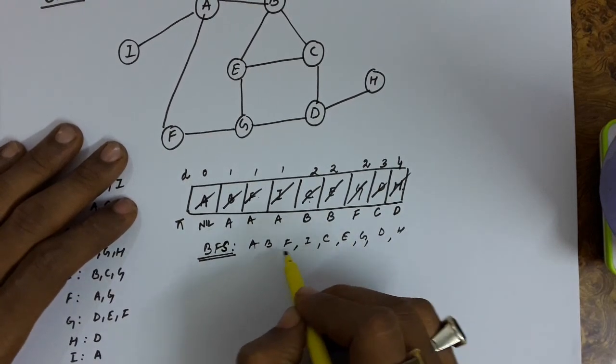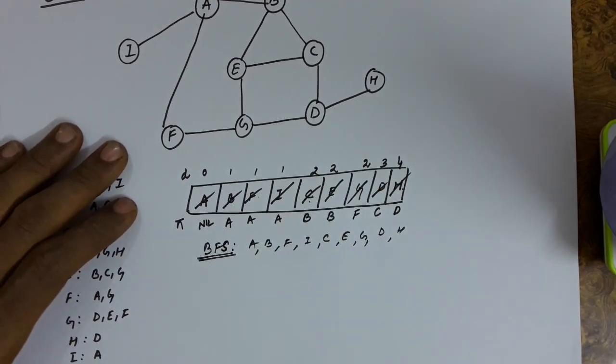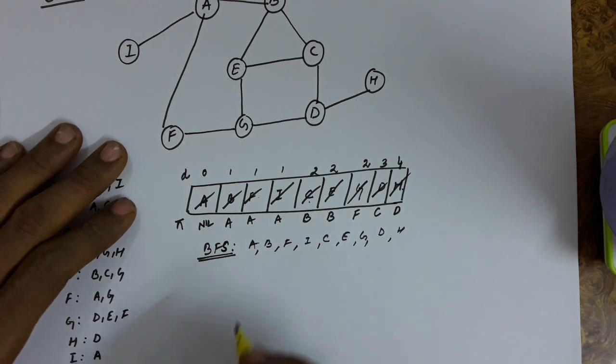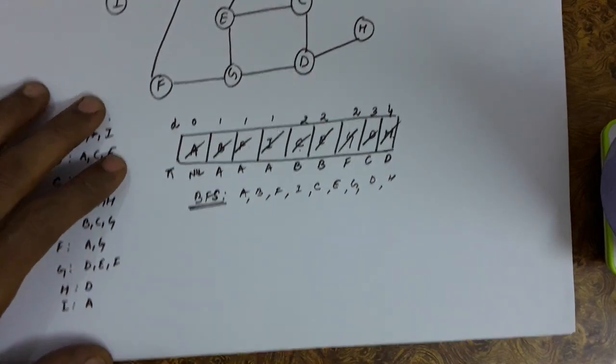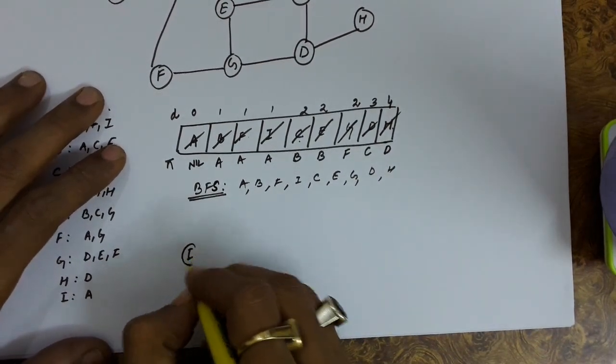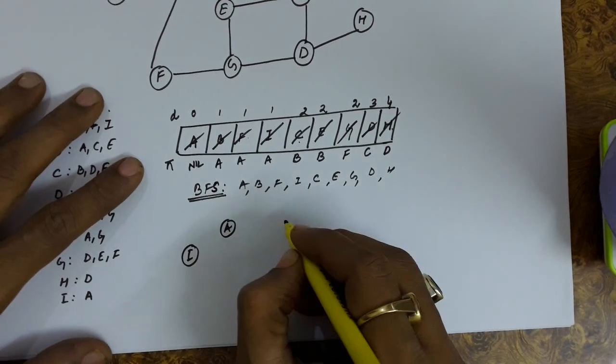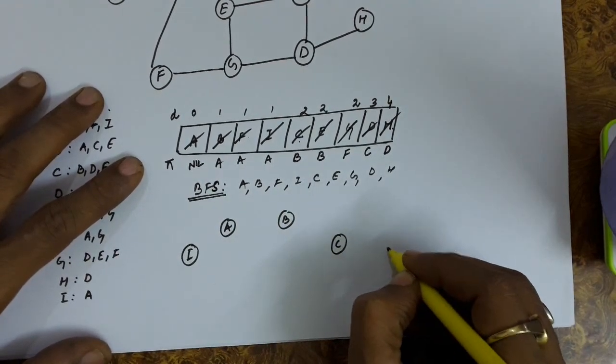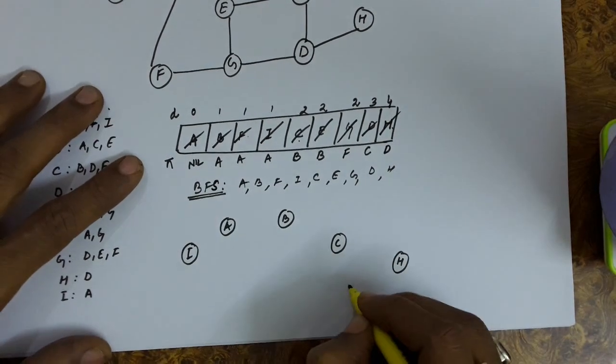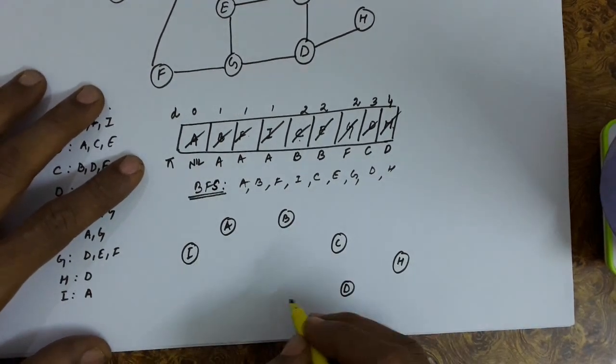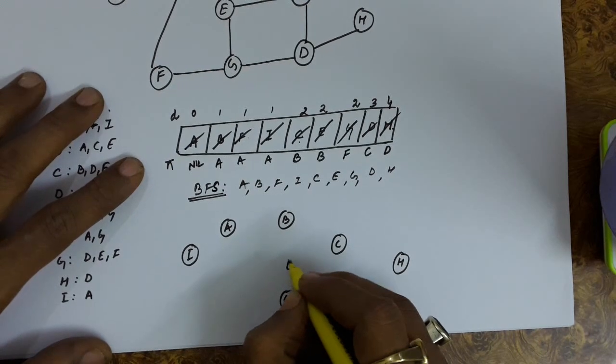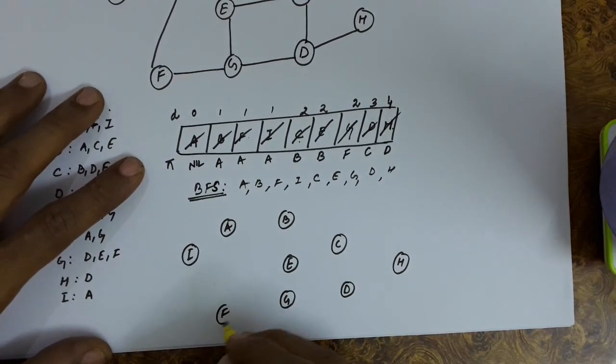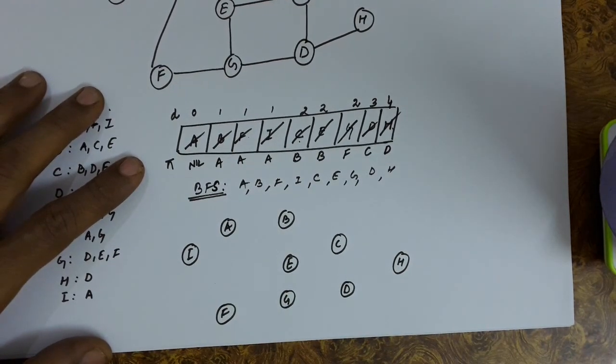This is the BFS sequence. Now about the distance and the BFS tree. Let us make the graph by only showing the vertices. We will show the edges with the help of the predecessors.